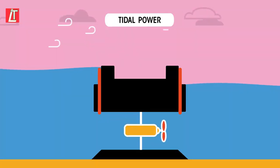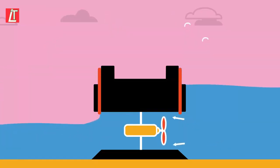At high tide, the water is trapped behind a dam, and as it flows out at low tide, electricity is generated.